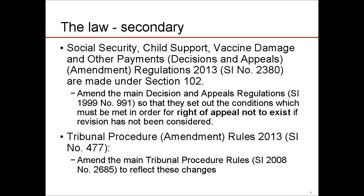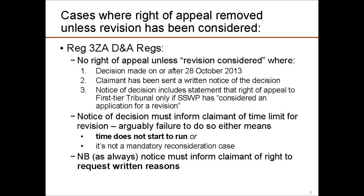There's also been another set of amendment regulations to do with tribunal procedure, because mandatory reconsideration changes not only the way that the DWP does things, but also the way that the tribunals respond, in that they are the ones that you have to appeal to direct. Those tribunal procedure amendment rules amend the main tribunal rules to reflect the changes. So what the changes do is they remove the right of appeal unless a revision has first been considered.